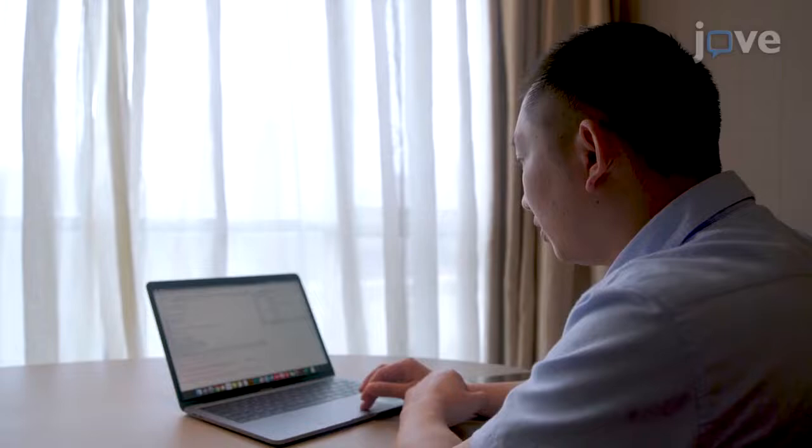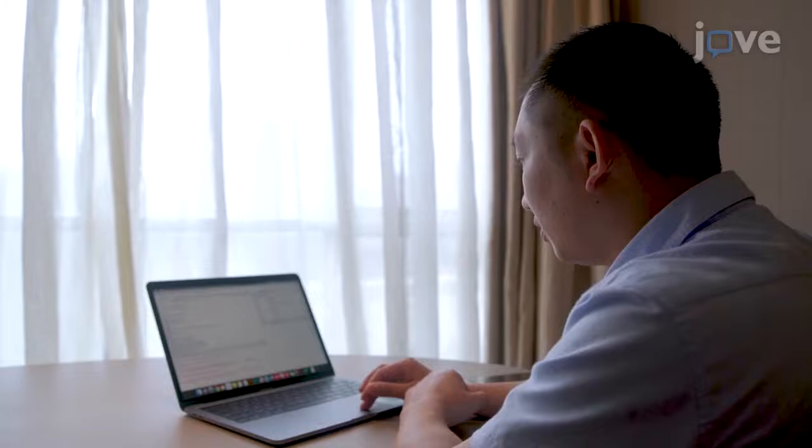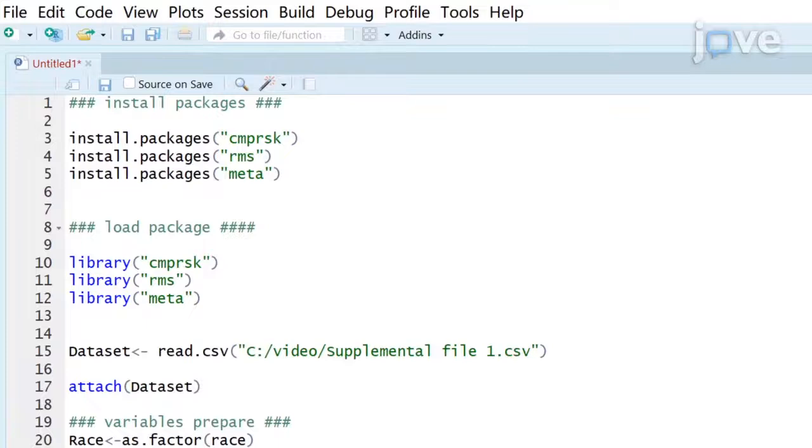After installing the RMS and competing risk R packages, load them and import the cohort data. To establish the Cox Proportional Hazards Regression model, fit the model to the data using the CPH function.